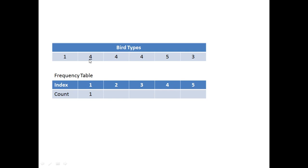Then I go to the second bird, which is of type 4, and update the frequency table at index 4 to 1. The third bird is also type 4, so I update it from 1 to 2. The fourth element is again type 4, so I update from 2 to 3. The fifth bird is type 5, so I go to index 5 and update it from 0 to 1. The last bird is type 3, so I go to index 3 and update it. Among all, type 4 is the most commonly occurring bird.